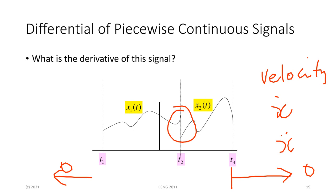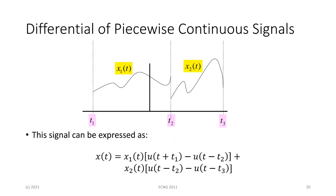How does a system determine the derivative of that? Using velocity as the example — it's a voltage going into the system in the car, the car takes the derivative of that voltage, and the result is supposed to be the acceleration used to help the brakes work, react with the anti-lock system, or activate some safety feature. We can express the signal mathematically: x1 times [u(t + t1) minus u(t − t2)].